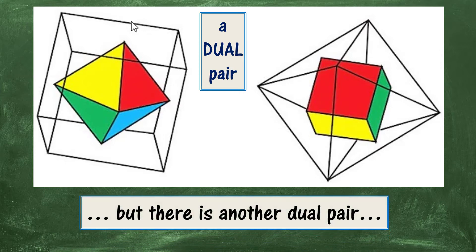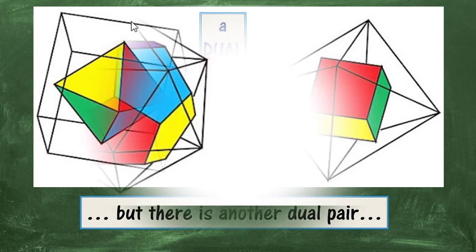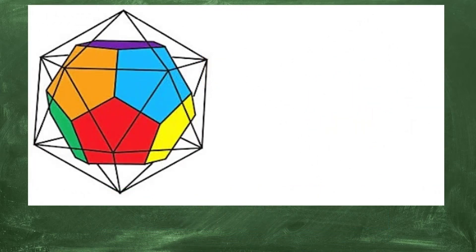But there's another dual pair. If we start with an icosahedron and do the same thing, join the centres of each of the faces, we get a dodecahedron.